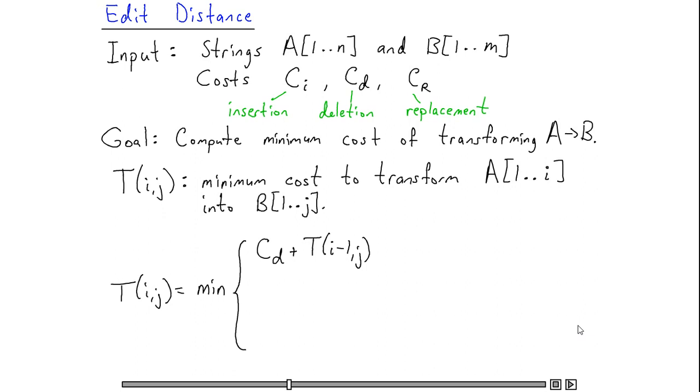delete the i-th character of A, and then optimally transform the first i-1 characters of A into the first j characters of B.